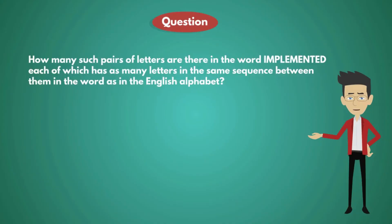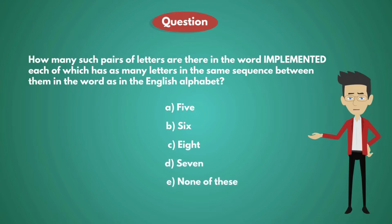How many such pairs of letters are there in the word I-M-P-L-E-M-E-N-T-E-D, each of which has as many letters in the same sequence between them in the word as in the English alphabet? Options are: A) 5, B) 6, C) 8, D) 7, and E) none of these.